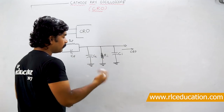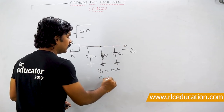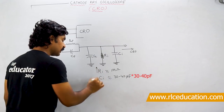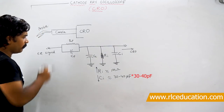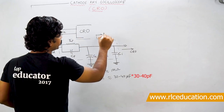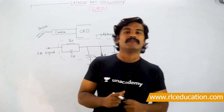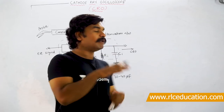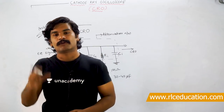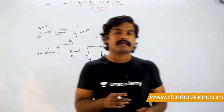The input resistance of the CRO is very high, around 1 mega ohm, and the input capacitance is low, in the order of 30 to 40 picofarads. High input resistance and low input capacitance are desirable qualities. This combination of passive elements forms what is called the attenuation network. The purpose of the attenuation network is to attenuate or step down the input signal to a magnitude that is safe for the CRO to operate.